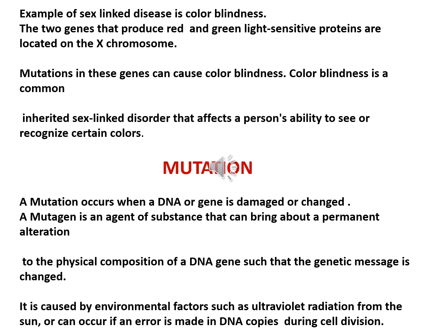One example of sex linkage is color blindness. The two genes that produce red and green light-sensitive proteins are both located on the X-chromosome. So mutation in these genes can cause color blindness. It is a common inherited sex-linked disorder that affects a person's ability to see.